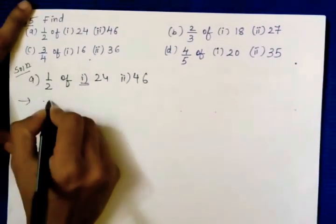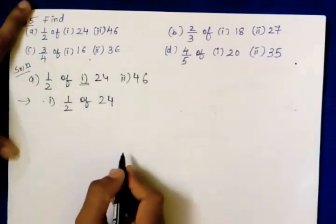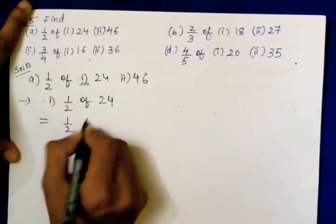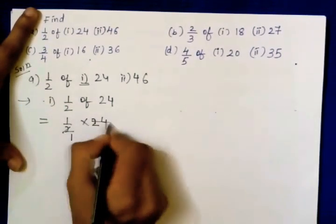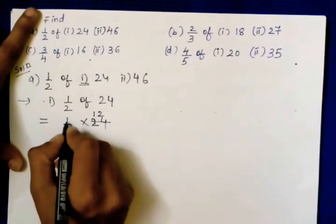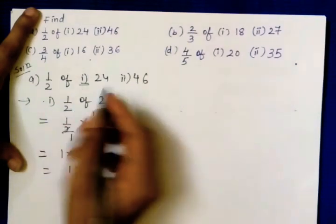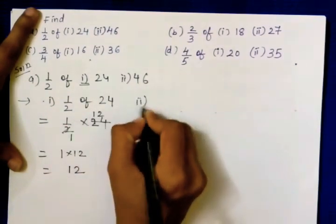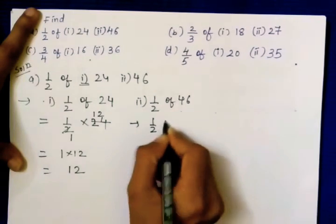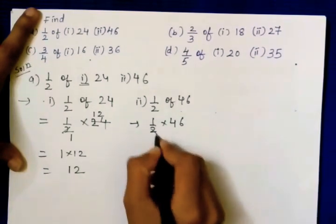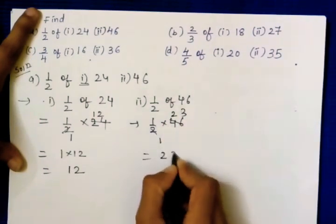First one: half of twenty-four. Write down half of twenty-four. 'Of' means multiply, so half into twenty-four. Cancellation: two and twenty-four — two ones and two twelves — leaves one into twelve, so the answer is twelve. Second part: half of forty-six — half into forty-six, cancellation gives one into twenty-three, so the answer is twenty-three.